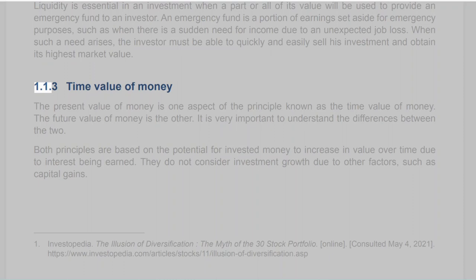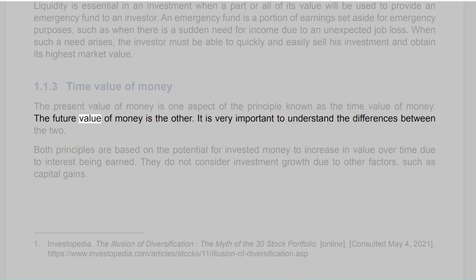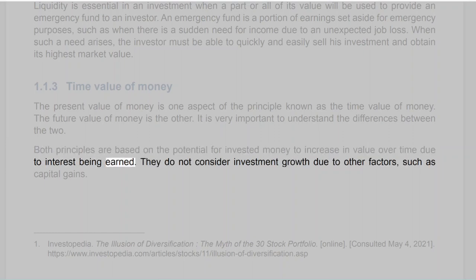Section 1.1.3: Time Value of Money. The present value of money is one aspect of the principle known as the time value of money; the future value of money is the other. Both principles are based on the potential for invested money to increase in value over time due to interest being earned. They do not consider investment growth due to other factors, such as capital gains.